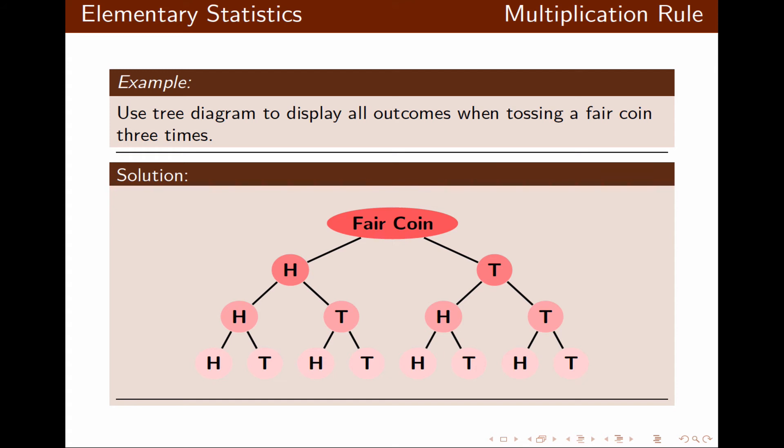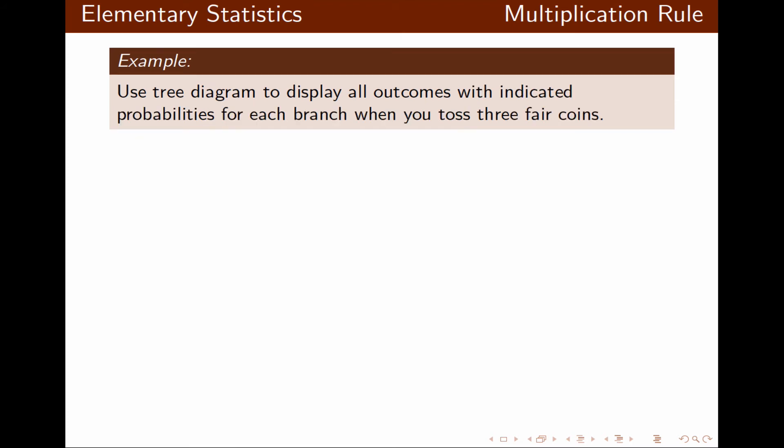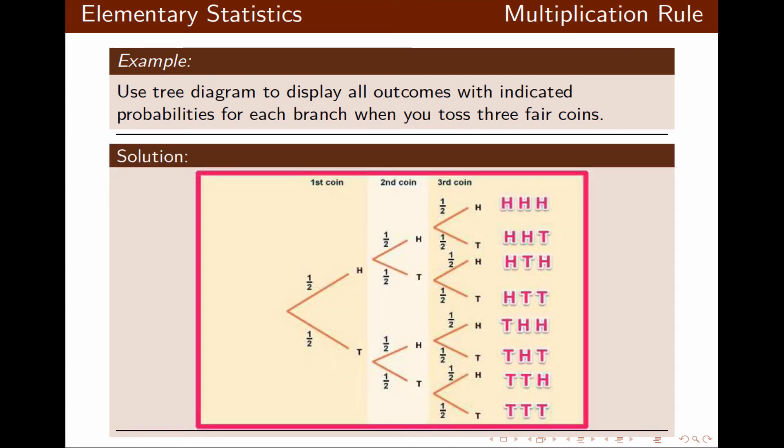We can get heads-heads-heads, tails-tails-tails, or any other path taken in the tree diagram. The tree diagram can also be drawn horizontally, with branches going to the right. Since this is a fair coin, the probability of each branch is one-half, giving outcomes from HHH all the way to TTT.